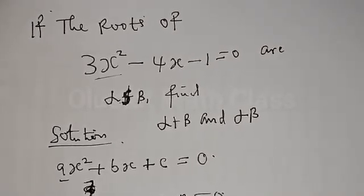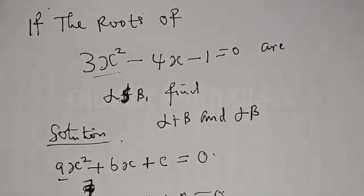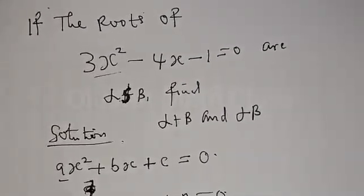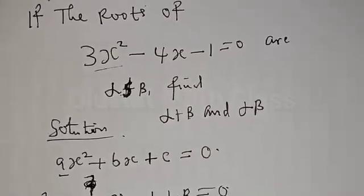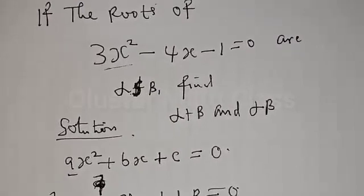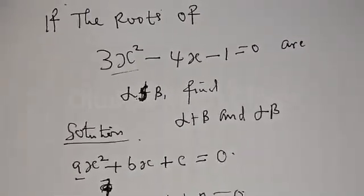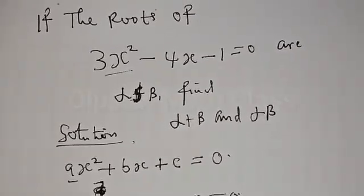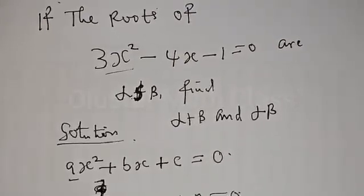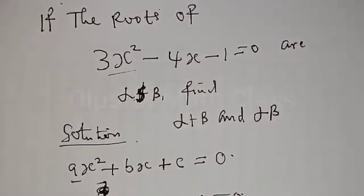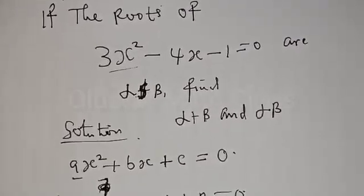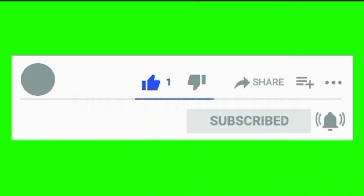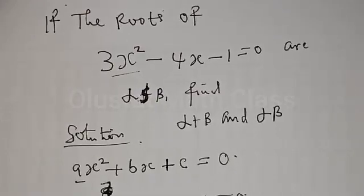If the roots of 3s² - 4s - 1 = 0 are alpha and beta, find alpha plus beta and alpha times beta. Hi everyone, welcome to my class. In this class we want to look at how to find the value of alpha plus beta, which is the sum of the roots, and alpha beta, which is the product of the roots, from this quadratic equation. Before we proceed, please don't forget to like, share, comment and subscribe.